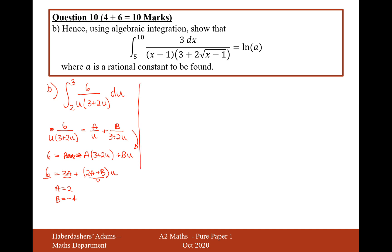So therefore what we're now integrating is the integral between the boundaries of 3 and 2 of not this expression here now, but A over u, which will be 2 over u, minus 4 over (3 plus 2u) du.